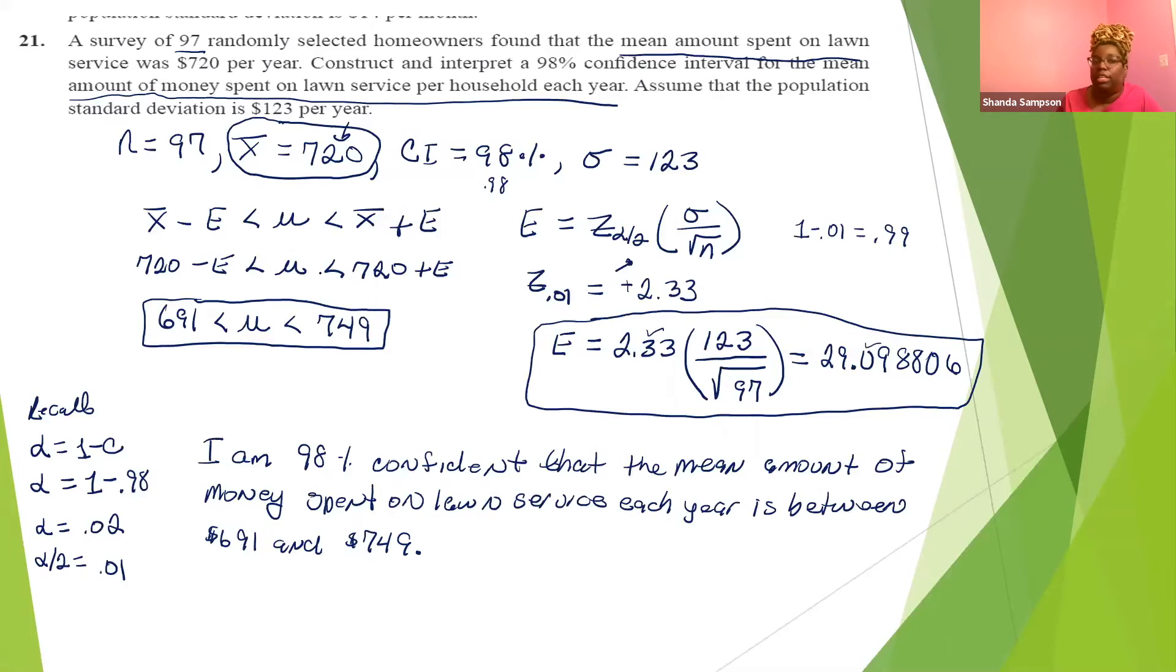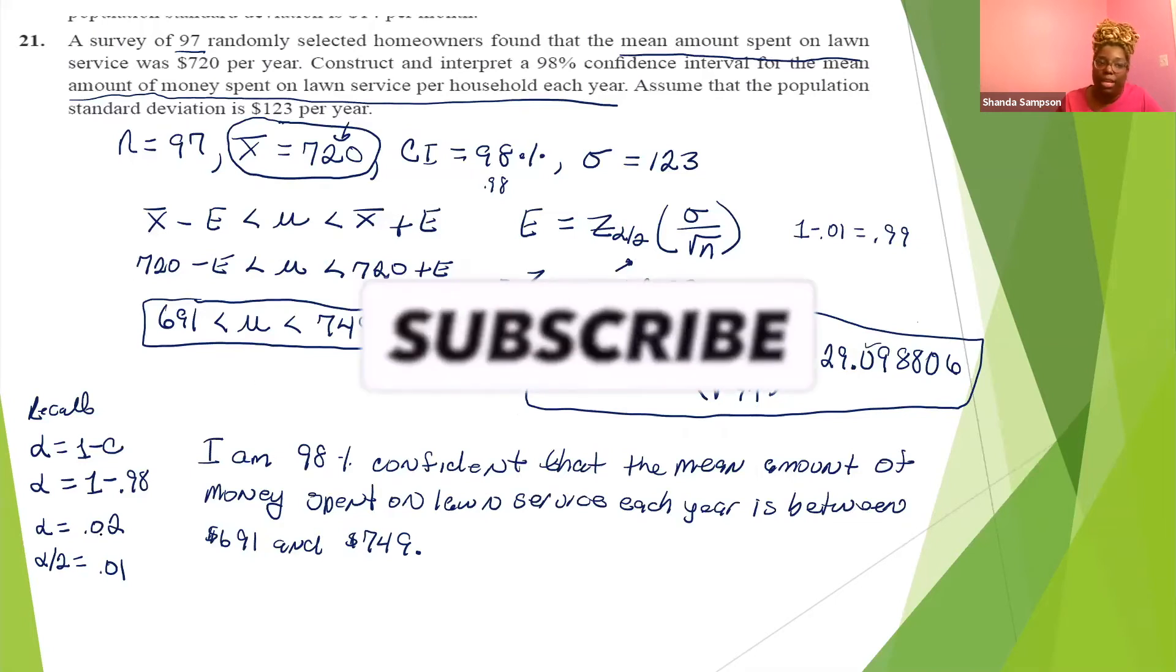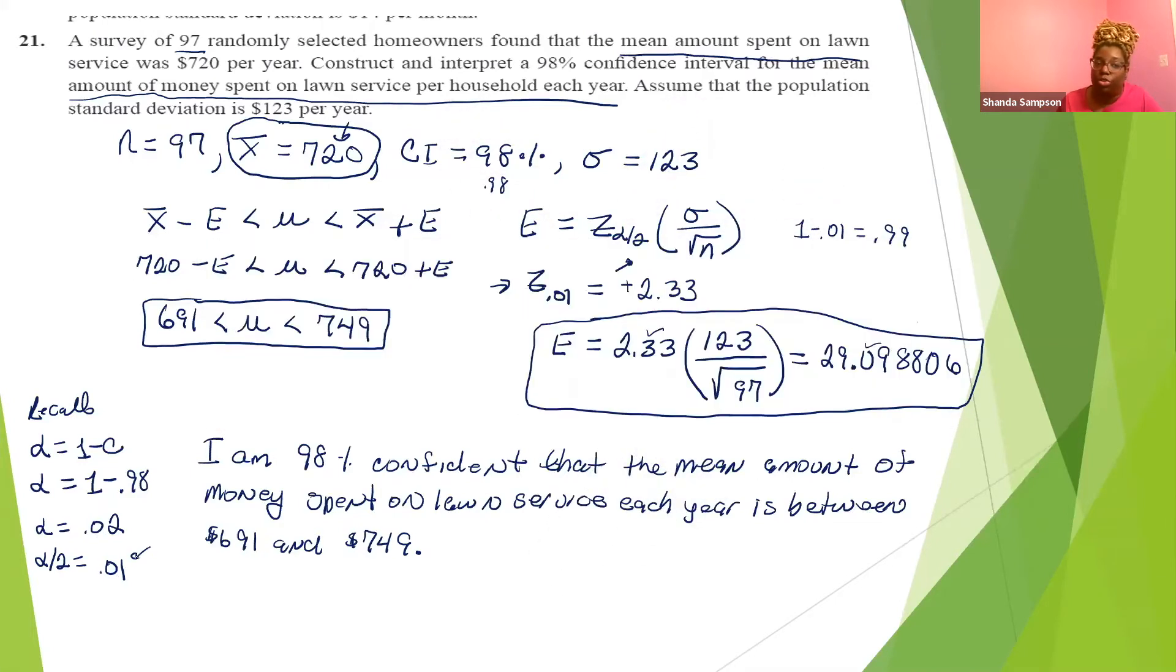They're going to ask you to interpret. The interpretation is that I am 98% confident that the mean amount of money spent on lawn care each year is between $691 and $749. This is a complete problem. You have all the parts in it. It's worth about seven points in my class because you have to find the margin of error. Let's do one more.